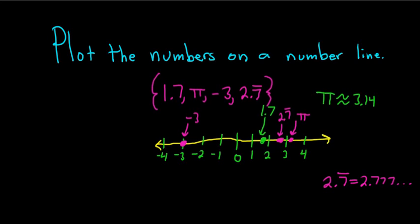So it doesn't have to be perfect. It's impossible, really, to be perfect with this, except in the case of maybe negative 3. So you just do the best you can. That's how you plot numbers on a number line. I hope this video has been helpful to someone out there who is learning about mathematics.